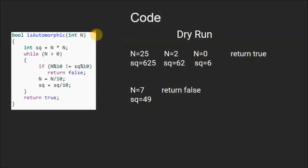This is the code for the problem. We have a function isAutomorphic that will return 1 if the number is automorphic and 0 if it is not. We have a number n, which is our original number. We calculate the square of the number by n * n. We run a while loop with condition n greater than 0, then check if n mod 10 is equal to square mod 10 — that is, whether the last digit of n equals the last digit of square.